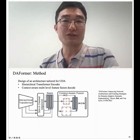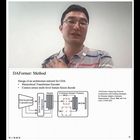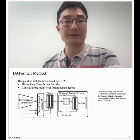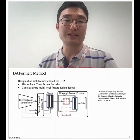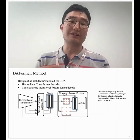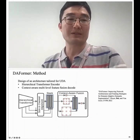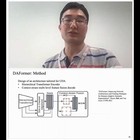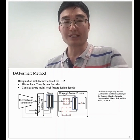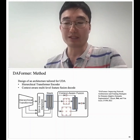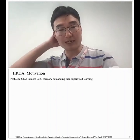DAFormer, a CVPR paper, uses a transformer — specifically the SegFormer architecture — as the encoder with a multi-level transformer architecture, augmented with multi-level dilated filter ideas for the decoder. This new backbone provides a really significant boost compared to backbones typically used for unsupervised domain adaptation.